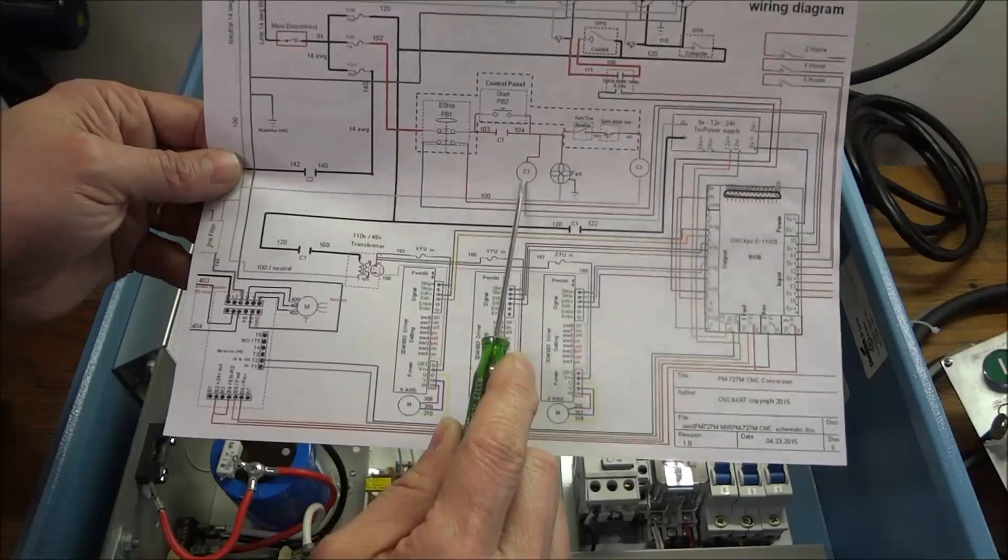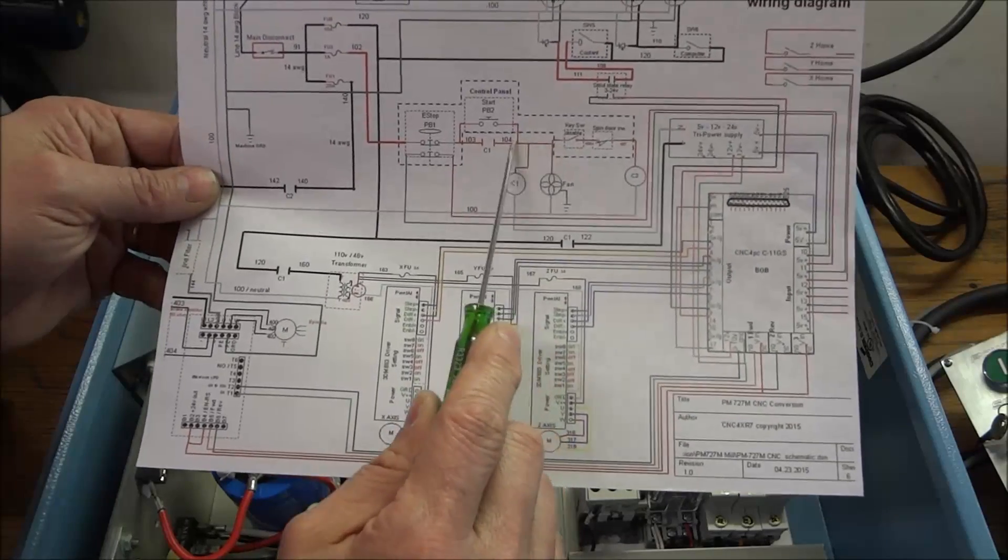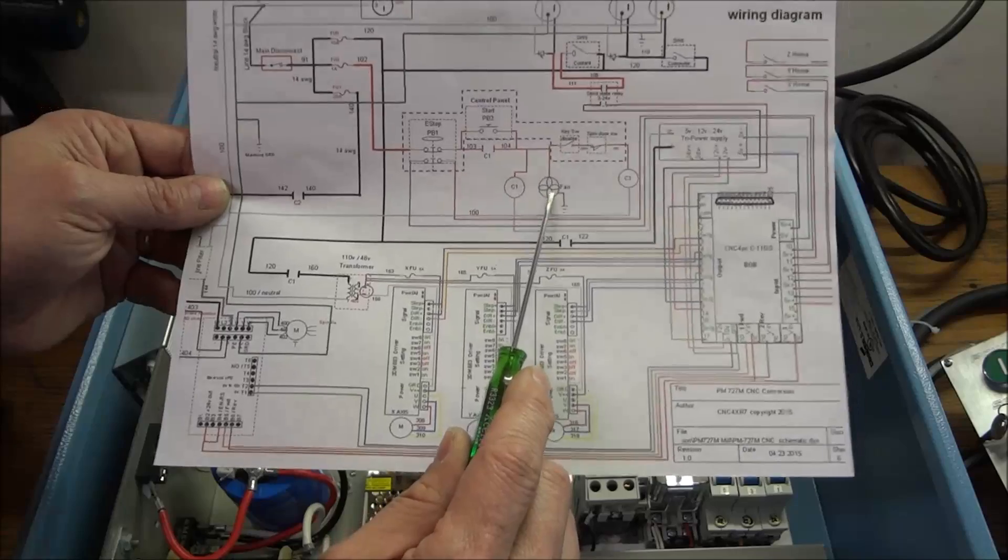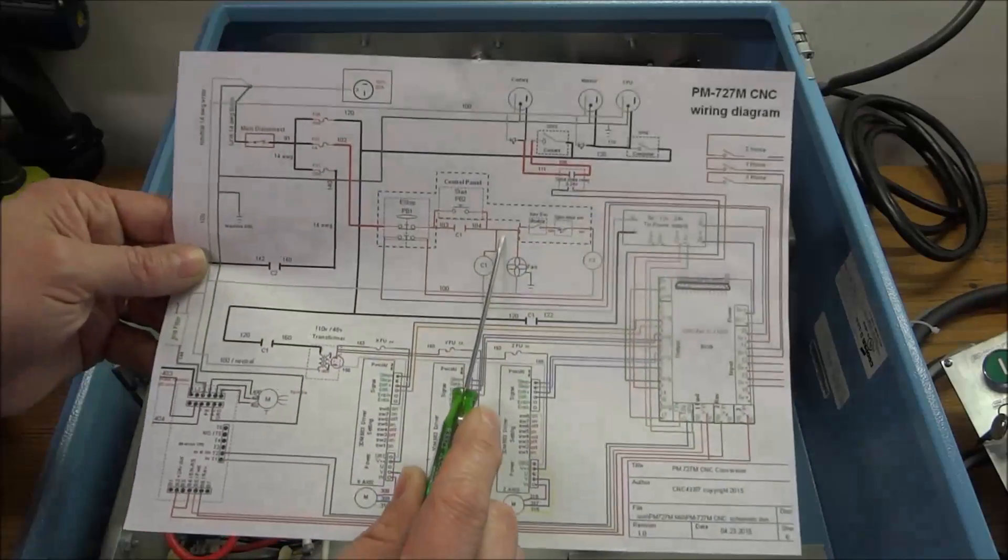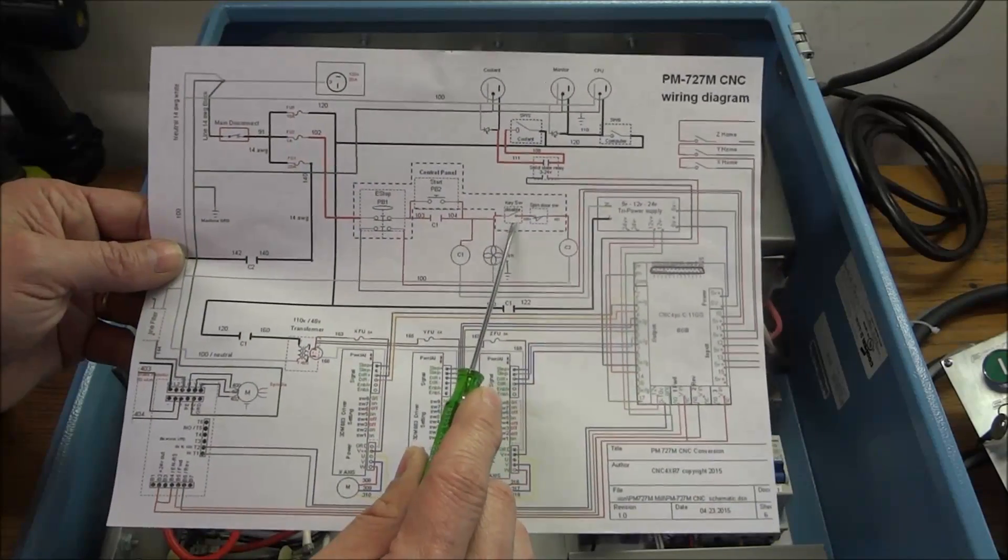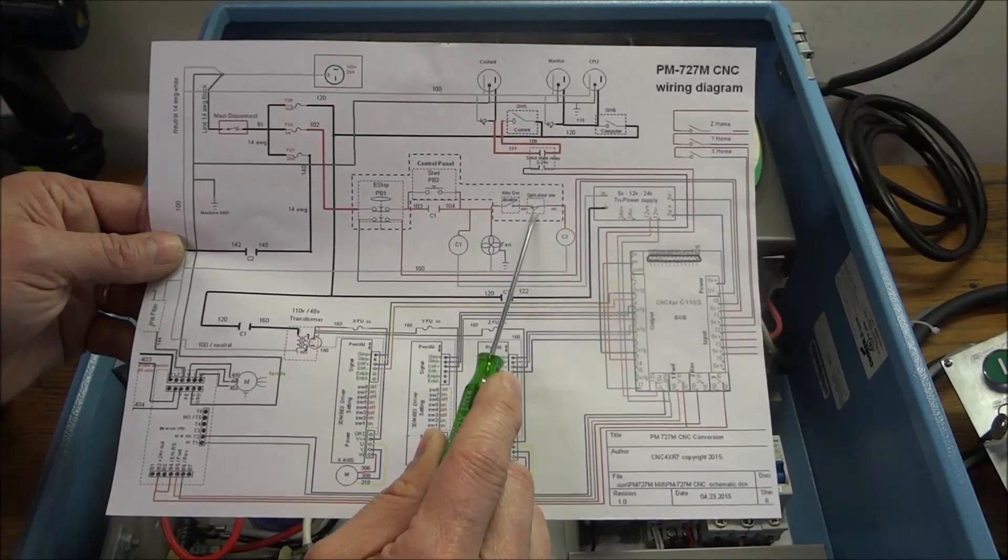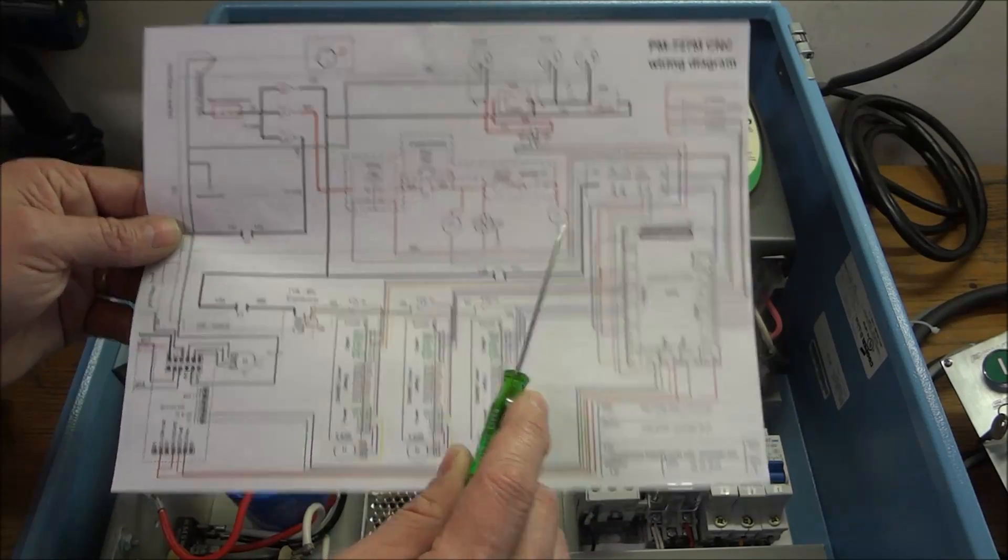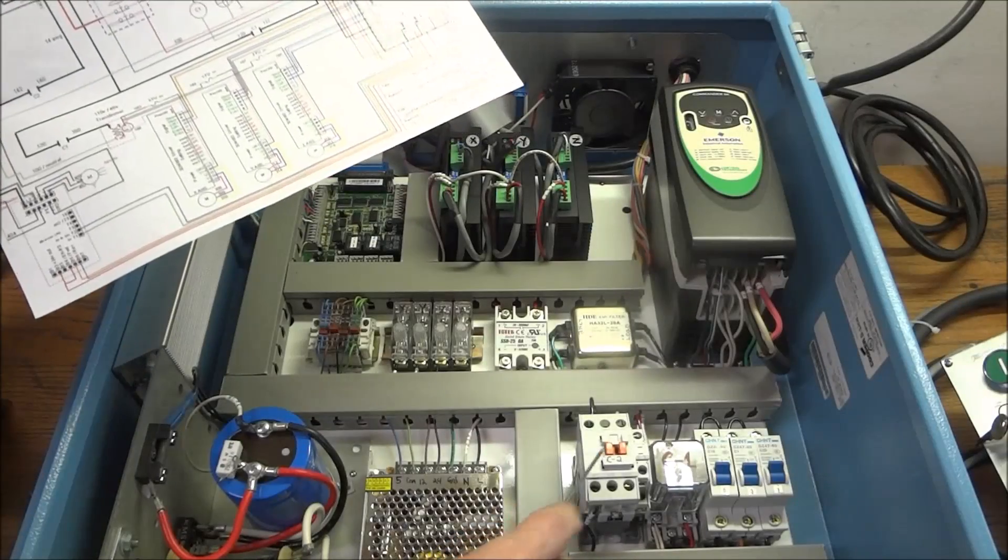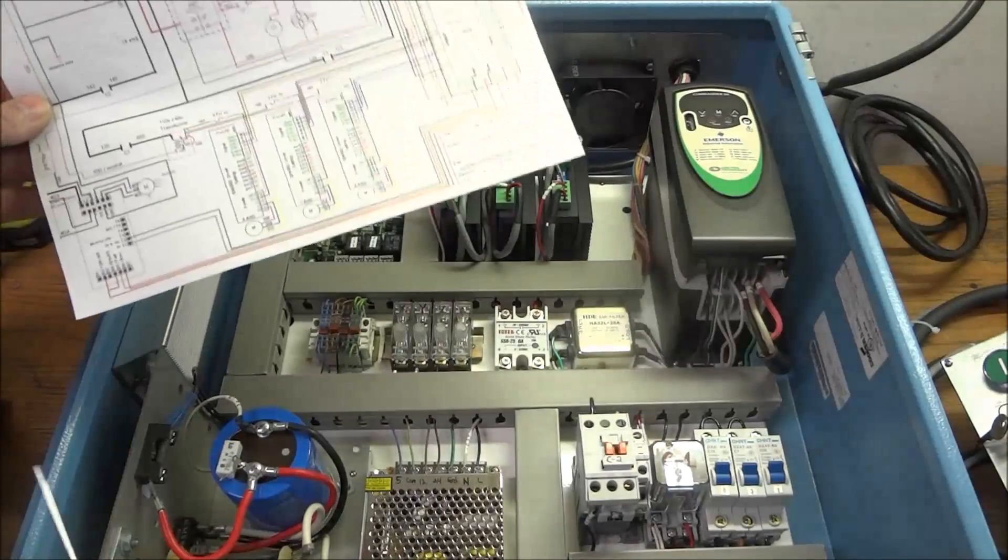After C1 contactor is pulled in, the fan will come on and also if the key switch is turned and the door switch is closed, it will also energize C2 contacts for our big contactor and power will be applied to our VFD.